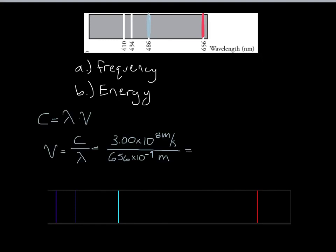To find the frequency, we use the equation C equals lambda times the frequency, and solve for the frequency part — rearranging to: frequency equals the speed of light divided by the wavelength in meters. That means the constant speed of light divided by 656 times 10 to the negative 9th, which is the 656 nanometer wavelength converted from nanometers into meters. Plugging this into our calculators gives a frequency of 4.57 times 10 to the 14th hertz.